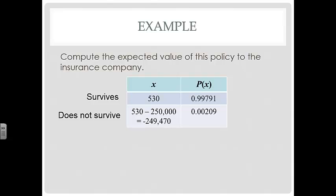Now, if she doesn't survive, then the insurance company keeps that $530, but they're paying out $250,000. So now the X value is negative $249,470. And that probability was 0.00209. All we did to get that was subtract the P of 530 from 1, because all your probabilities have to add up to 1.